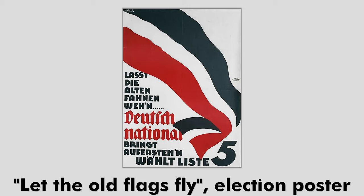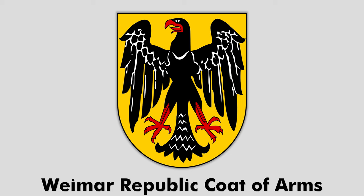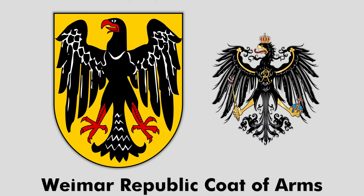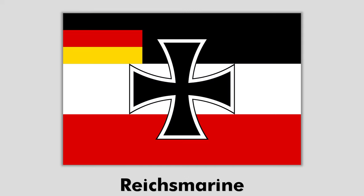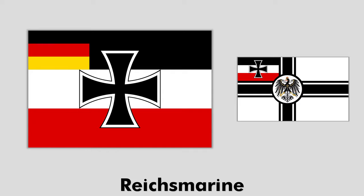This change was not welcomed by many people in Germany, who saw this new flag as a symbol of humiliation following Germany's defeat in the First World War. The Weimar Republic retained the Reichsadler as coat of arms, but without the symbols of the former monarchy. The Weimar Republic navy, or Reichsmarine, insisted on using the pre-1918 colors of the former Kaiserliche Marine.